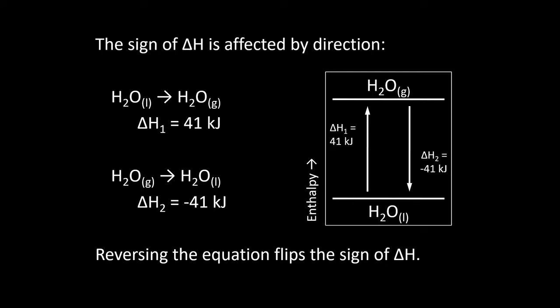Similarly, if we take a reaction and we flip it — so the stuff that was a reactant is now a product and the stuff that was a product is now a reactant — we simply flip the sign of the enthalpy. Because all we're doing is changing the direction the reaction is moving; we're just flipping the starting and ending points. The overall distance between the two is exactly the same. So the reverse reaction will have the exact same enthalpy value, just opposite in sign.